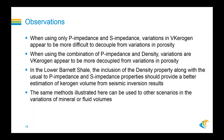Let's look at some observations. When using only P-impedance and shear impedance, variations in v-kerogen appear to be more difficult to decouple from variations in porosity. When using the combination of P-impedance and density, those variations of v-kerogen appear to be more decoupled from the variations in porosity. In the lower Barnett Shale, inclusion of the density property along with P-impedance and shear impedance should provide a better estimation of kerogen volume from seismic inversion results. The same methods illustrated here can also be applied to other scenarios studying variations of minerals or fluids and how they affect elastic properties.